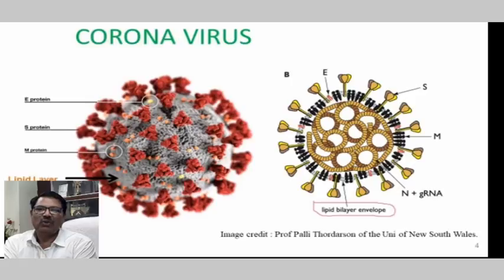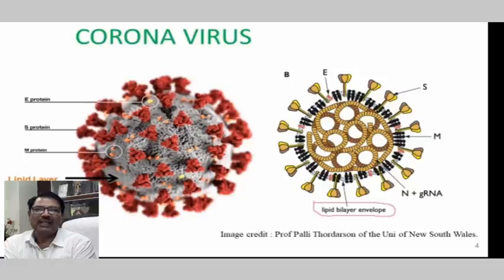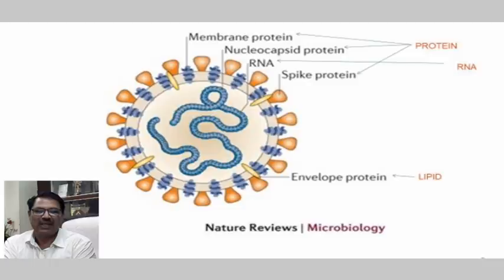This is the coronavirus structure given by WHO. We can clearly see the structure and what is inside the coronavirus. Three things are there: one is protein, another is a lipid layer, and inside there is genomic RNA. It is very important that the virus is enveloped by a lipid layer. Three types of proteins are present, RNA is also there, and the lipid envelope is there.